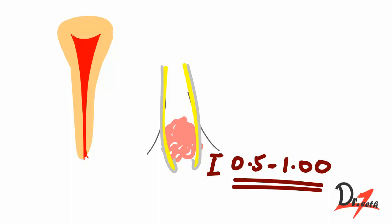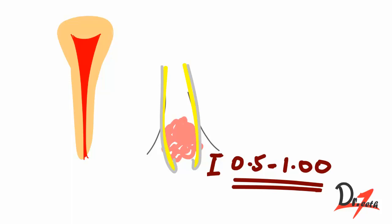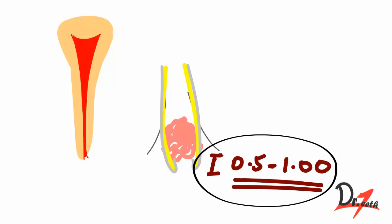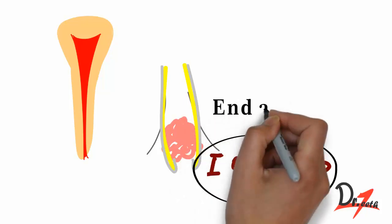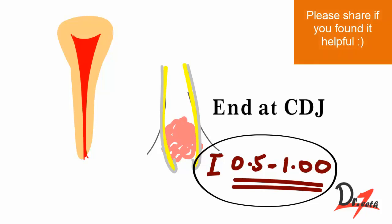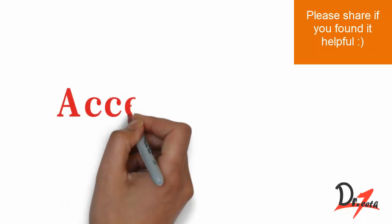The cementodentinal junction (CDJ) therefore does not necessarily occur at the extreme end of the root, but may occur within the main root canal — approximately 0.5 to 1 mm within the canal. That is why during cleaning and shaping we end at the CDJ, keeping the working length 0.5 to 1 mm less than the actual root length.